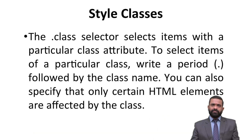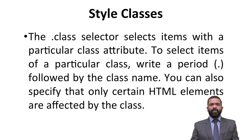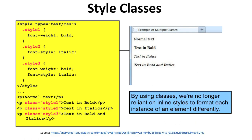Style Classes: The dot class selector selects items with a particular class attribute. To select items of a particular class, write a period (dot) followed by the class name. We can also specify that only certain HTML elements are affected by the class. By using classes, we are no longer reliant on inline styles to format each instance of an element differently.